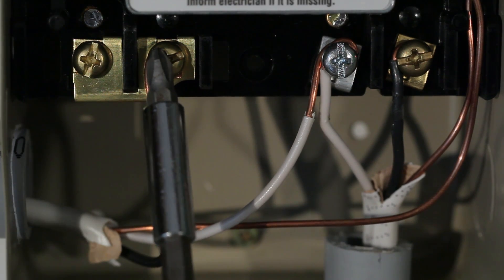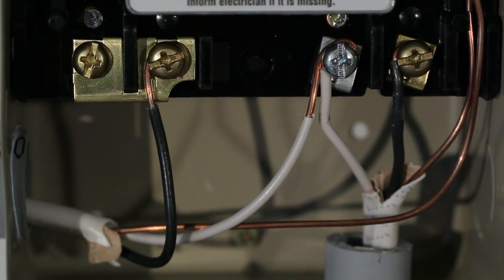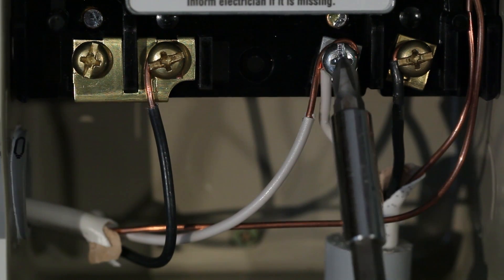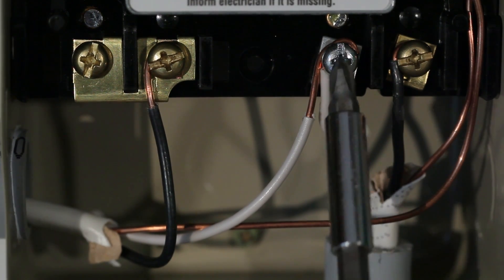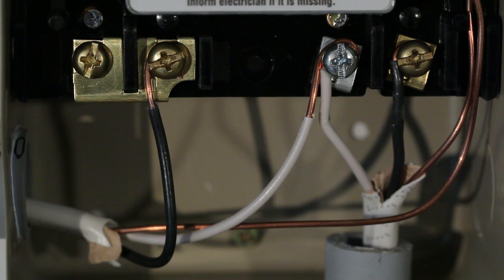Connect the black wire from the supply side to the second screw terminal marked 1. Connect the white wires from both the supply side and the switch side to the third screw terminal, the silver one, marked X.